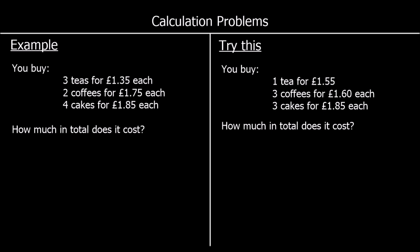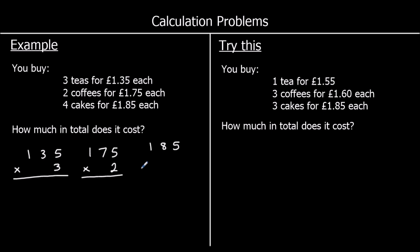Here is a different question. You buy three teas for £1.35 each, two coffees for £1.75 each, and four cakes for £1.85 each. What is the total cost? I'm going to work this out in pence: 135p times 3, 175p times 2, and 185p times 4. Then I can give the answer in pence or convert back to pounds.